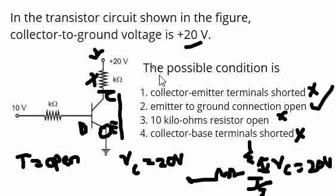So in this transistor circuit, if 20 volts is measured between collector to ground, it means the transistor is in off condition, or as per the condition here, emitter to ground connection is open. Thank you.